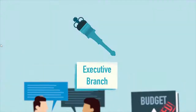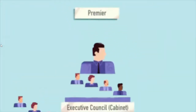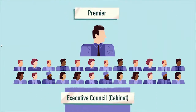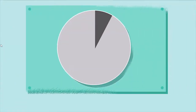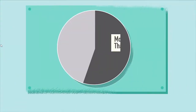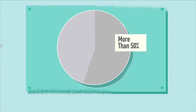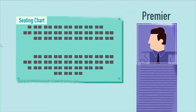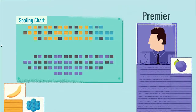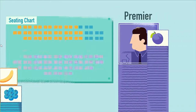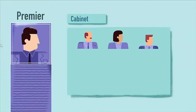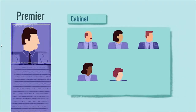Then, there is the executive branch, led by the Premier and the Executive Council, or Cabinet. The Executive Council has to maintain the support of a majority of the MPPs in the Legislative Assembly in order to be able to govern the province. In most cases, the role of the Premier is given to the leader of the party who has the most elected MPPs in the Legislature.